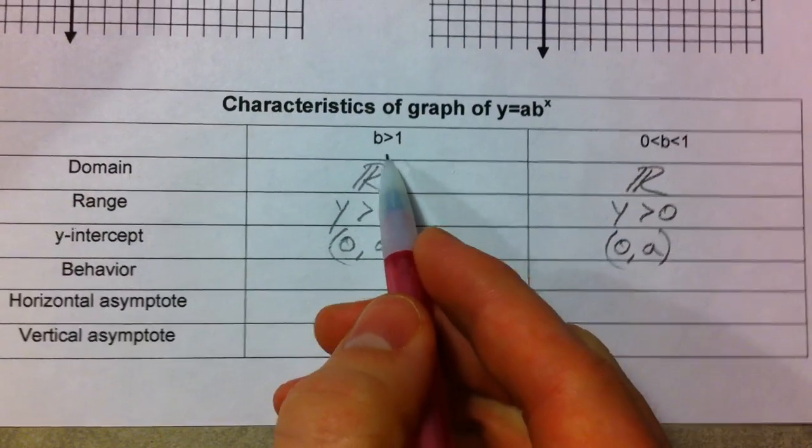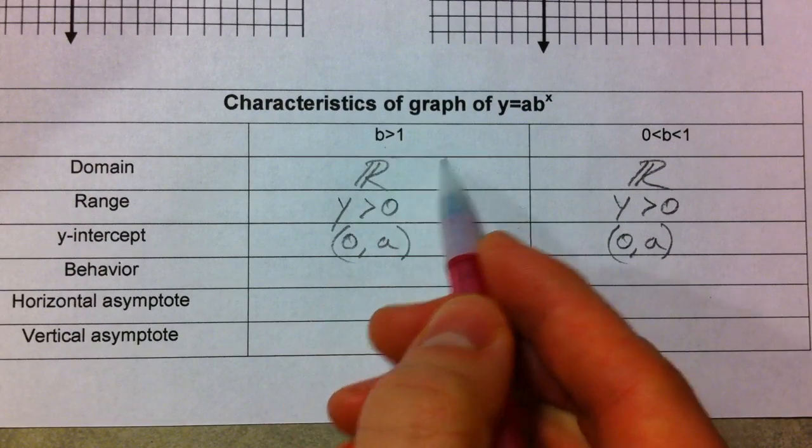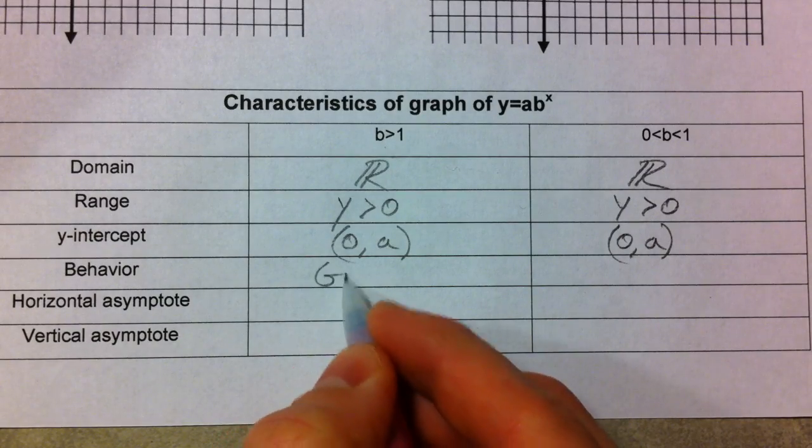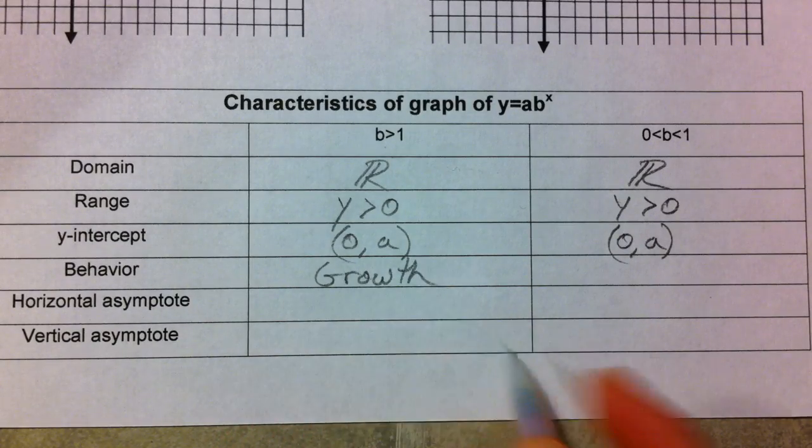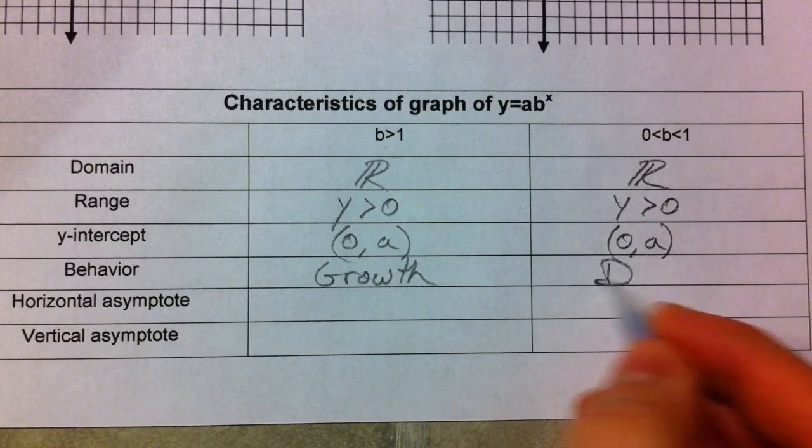Moving on. Behavior. We talked about if it was bigger than 1, times 2, times 2, times 2. It's getting bigger and bigger and bigger. So, that's growth. And if it's less than 1, it's going to be decay.